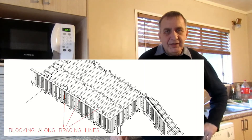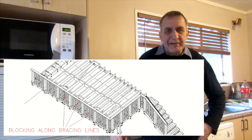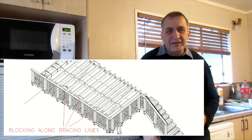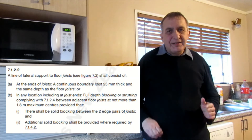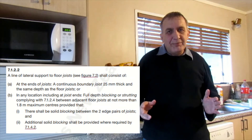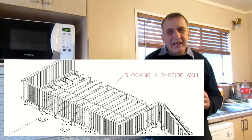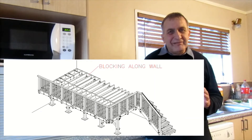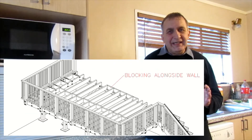Blocking is used in a few different areas on a deck. The first area is along the bracing lines, outlined in NZS 3604 under clause 7.1.22, and the blocking there is at 1.8m spacings. The second area is at the outermost ends of the deck. The third area is along the wall of the house — if it's in a corner the arrangement is a little bit different, but normally it would be midway, and this is a length of 1.8m of blocking in one line.